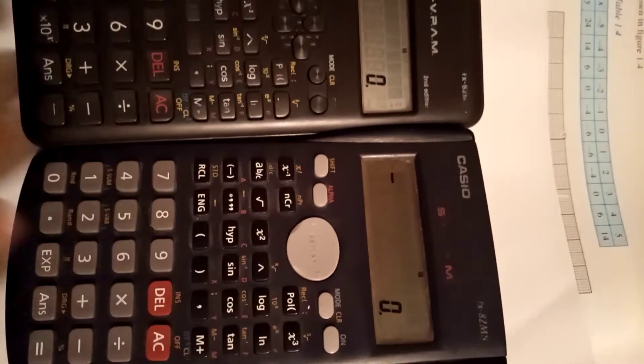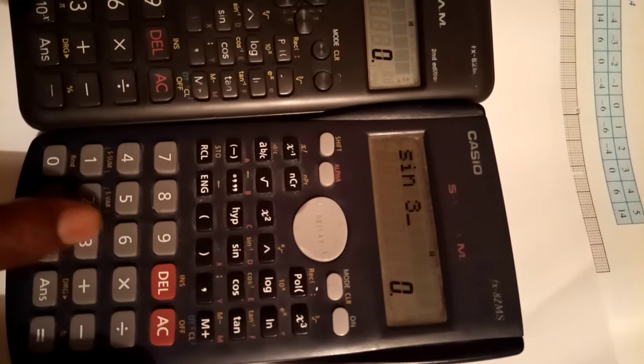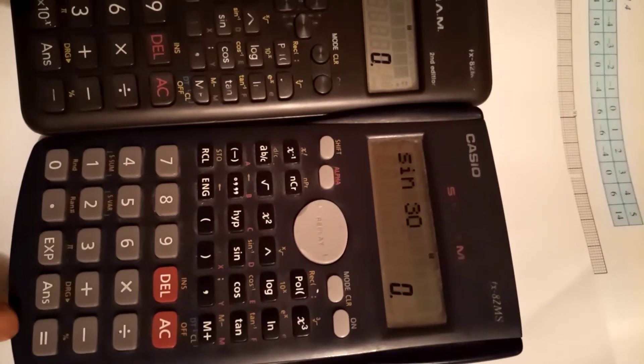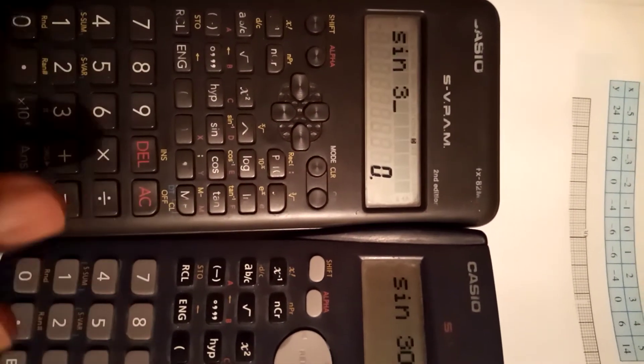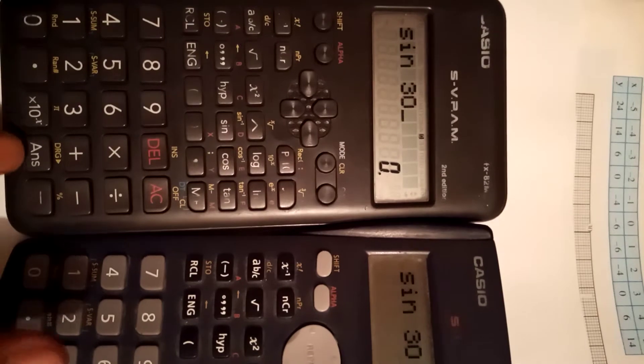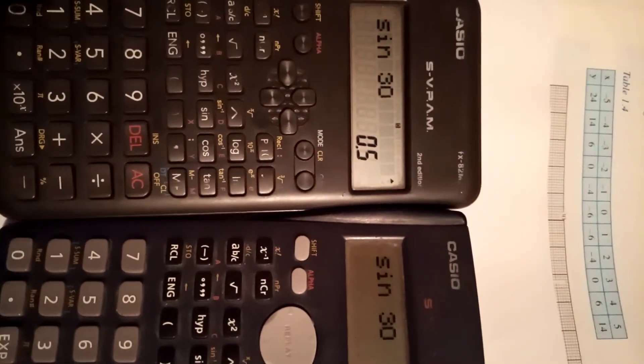So let's see, the answer is zero. We can try now looking for sine 30 again. Sine 30 gives you 0.5 now, and also this side sine 30 gives you the same thing, 0.5. So at least the calculator is reset.